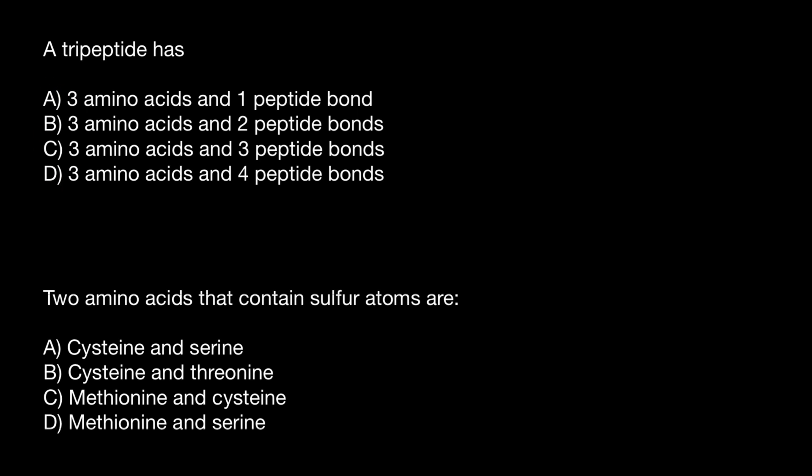So what is a peptide? Peptide is a small chain of amino acids. So basically when we say tripeptide, that means that we have one, two, three amino acids.